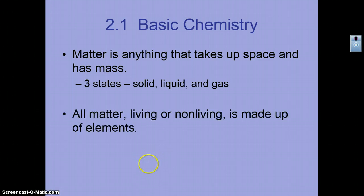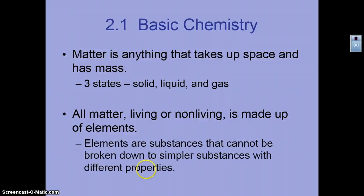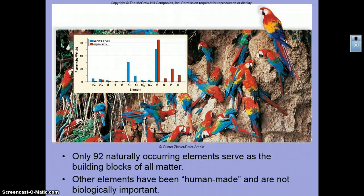All matter, whether it's living or non-living, is made up of elements — we talked about this last year in chemistry. Elements are substances that cannot be broken down to simpler substances with different properties. There are 92 naturally occurring elements, and these are the building blocks of matter. Other elements have been human-made, but we don't consider those biologically important.